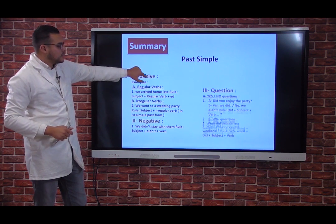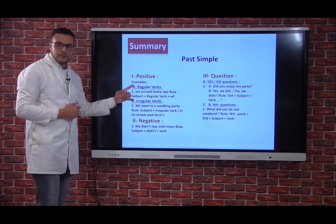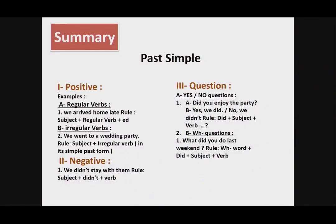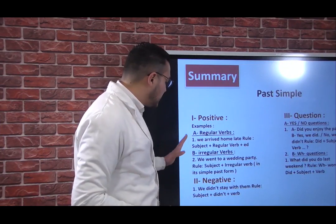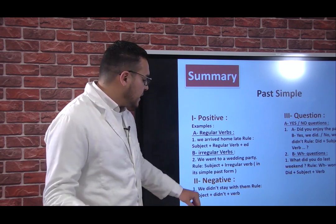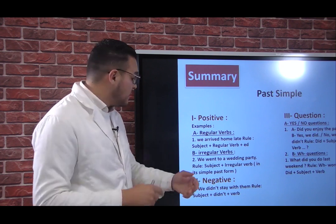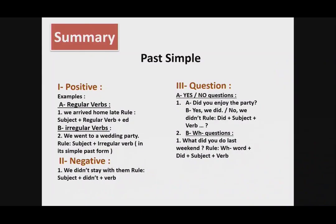Let's recapitulate what we've seen. For the positive form with regular verbs: verb + -ed — for example, we arrived home late. The rule is: subject + regular verb + -ed. For irregular verbs, you need to check the list — and you must learn it by heart. For the negative form, the auxiliary 'did' interferes: subject + didn't (short form) or 'did not' (long form) + verb in the infinitive form. For example: we didn't stay with them.